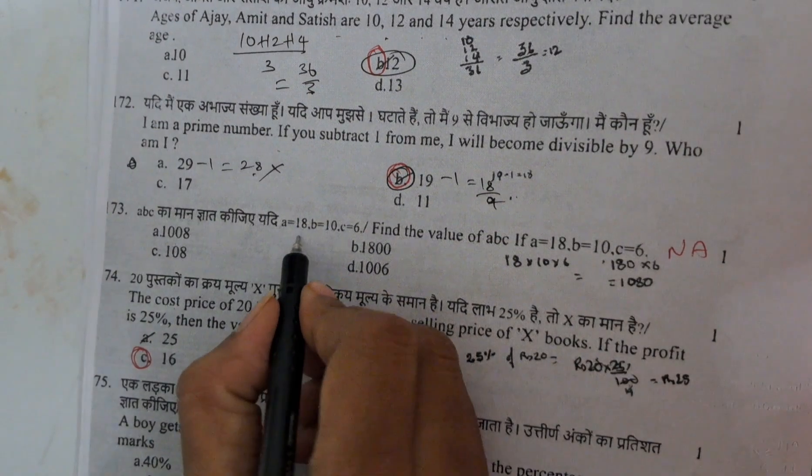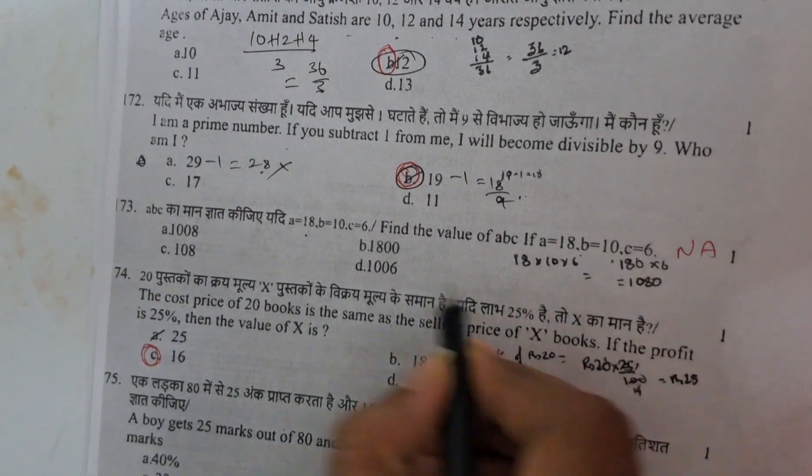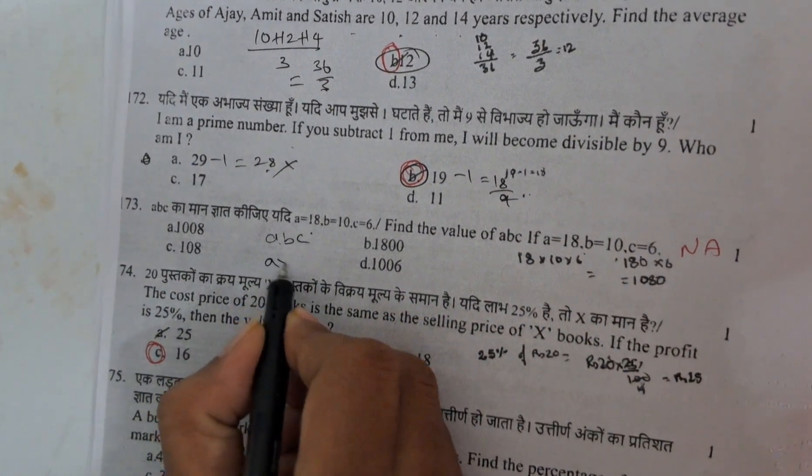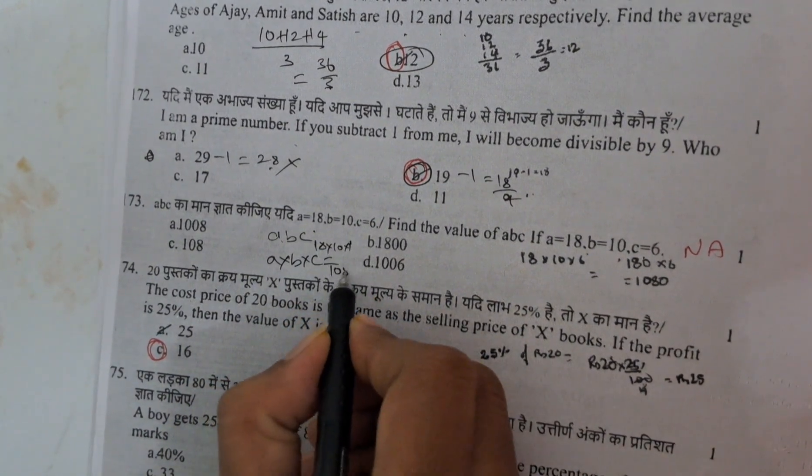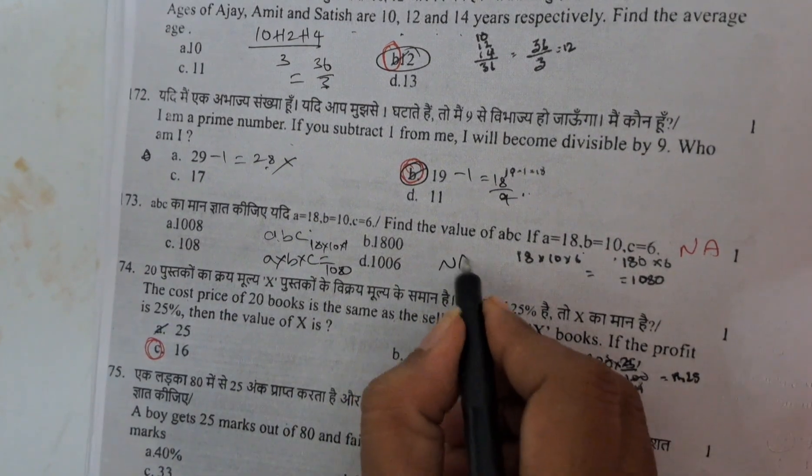And next here, A value they gave, B value gave, C. A, B, C they are asking. A, B, C nothing but A into B into C. Means 18, 10 into 16. Here 1080 you will get. There is no option. Here there is no option. Answer is 1080.